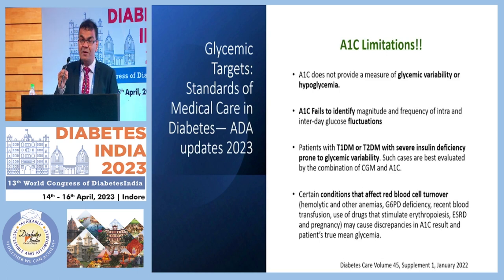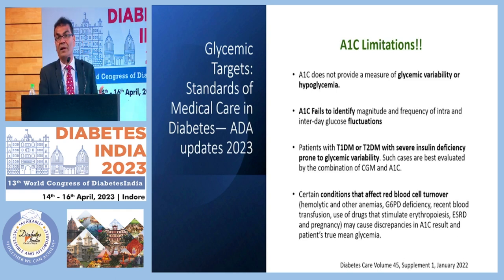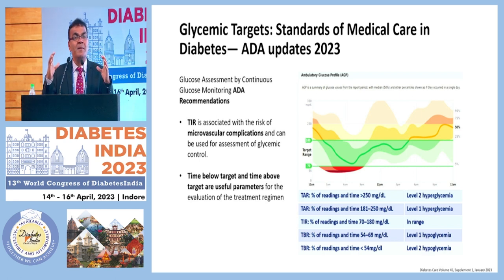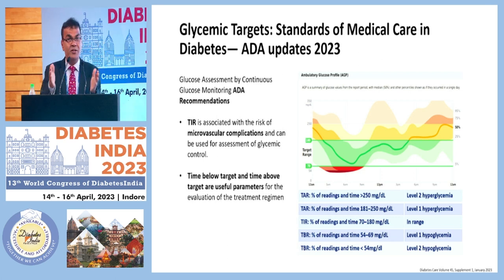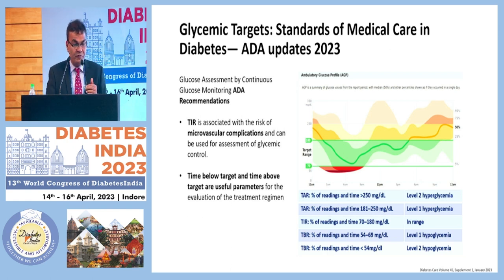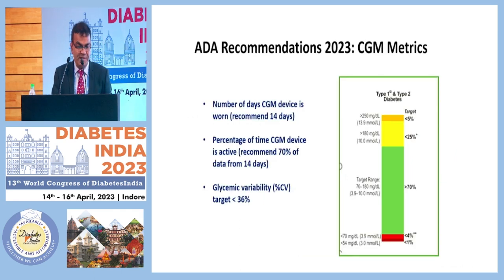Certain conditions that affect red blood cell count — such as hemoglobinopathies — are confounding factors for getting a good A1C result. As per ADA 2023 guidelines, we should try to achieve a time in range of more than 70%, meaning a person's glucose should remain between 70 to 180 mg/dL. Hypoglycemia below 70 for more than 5% of the day is not acceptable, and glucose above 250 mg/dL for more than 5% of the time is also not acceptable.